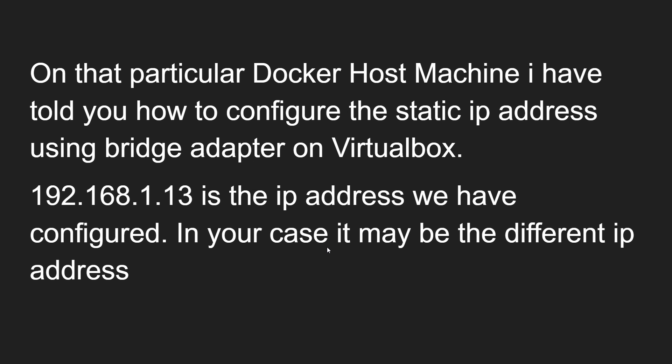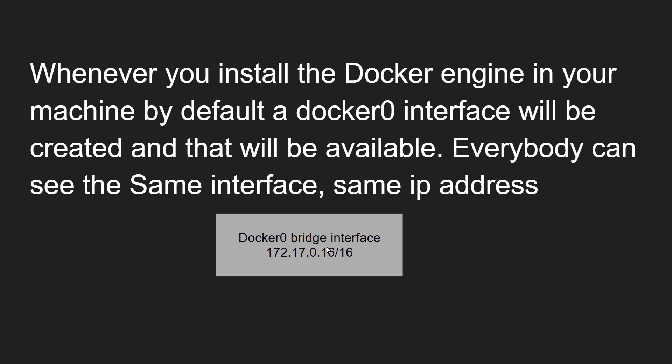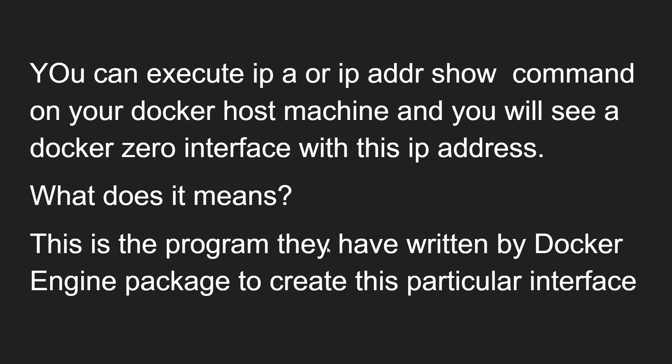On that Docker host machine, I have shown you how to configure a static IP address using the bridge adapter on VirtualBox. Right now our IP address is 192.168.1.13. Whenever you install the Docker engine on your machine, by default a docker0 interface will be created and will be available. The docker0 bridge interface has the IP address 172.17.0.1/16. You can see this on your virtual machine by using the `ip address show` command.